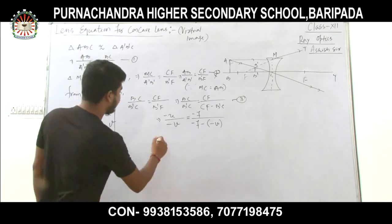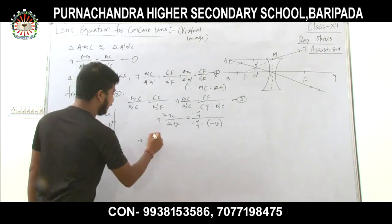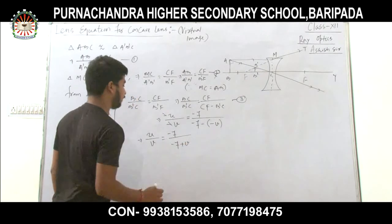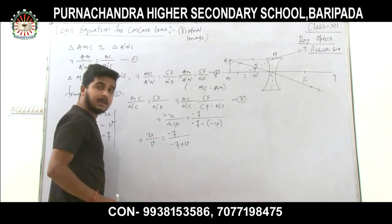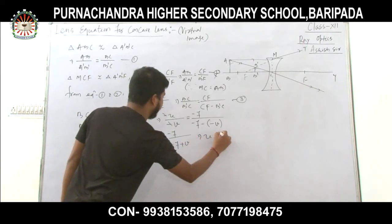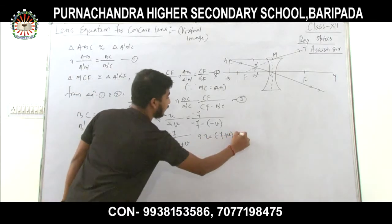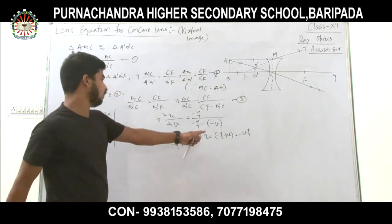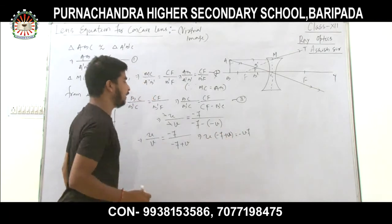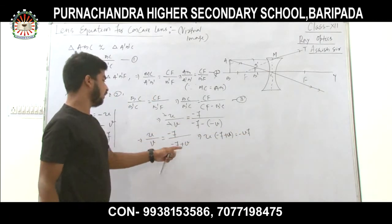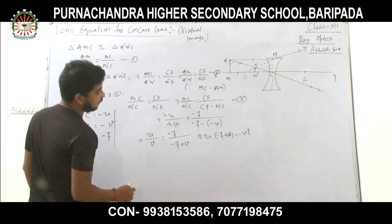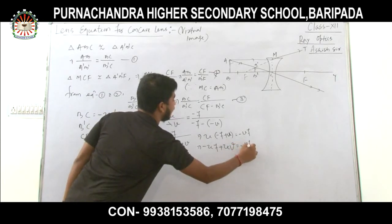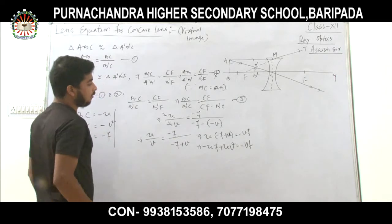Solving this, the negatives cancel out, leaving u / v = minus f / (minus f + v). Cross-multiplying: u(minus f + v) = v(minus f), giving minus UF + UV = minus VF. Mark this as Equation 4.